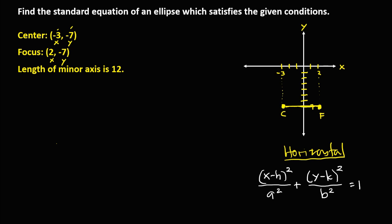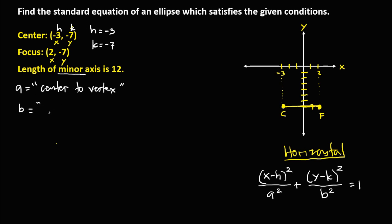From the given center, h is negative 3 and k is negative 7. To solve for b, since we have the length of the minor axis, b equals the length of the minor axis divided by 2. Since the length of the minor axis is 12, we have 12 divided by 2, so b is equal to 6.